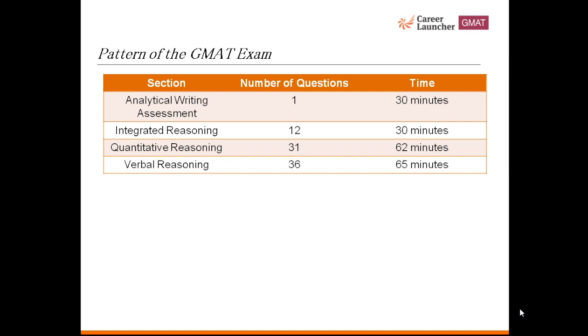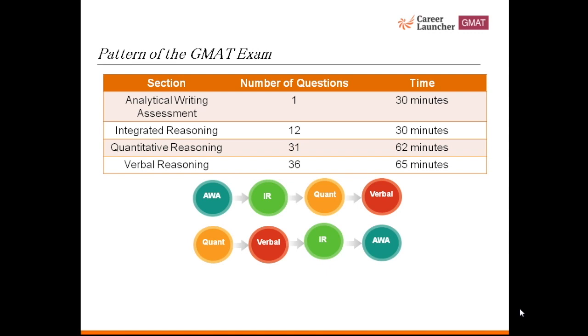Verbal reasoning section consists of 36 questions to be completed in 65 minutes. You can select the order in which you want to attempt these sections. You can choose from three options: first AWA then IR then quant then verbal, you can start with quant then verbal IR and AWA, or you can start with verbal quant IR and then AWA.